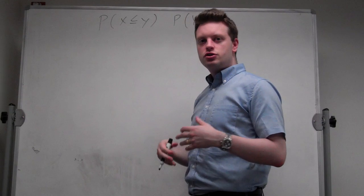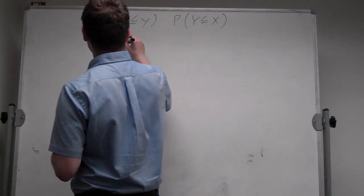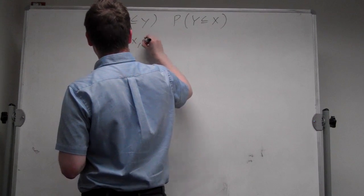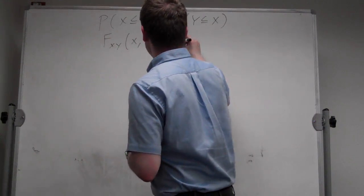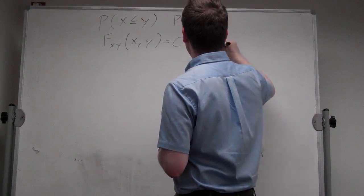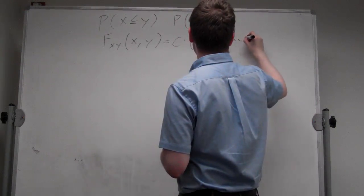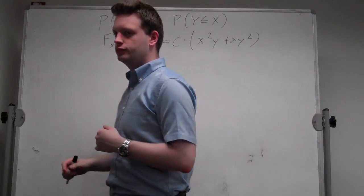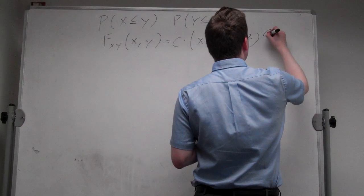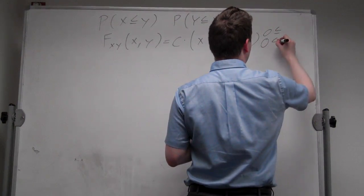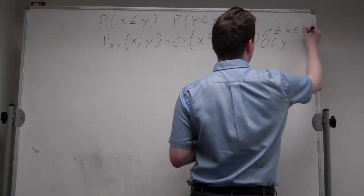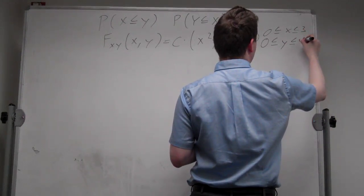Let's assume the following cumulative distribution function: F(x,y) is equal to some constant c times x squared y plus x times y squared. In addition, we have some bounds. In particular, 0 is less than or equal to x and y, and x is less than or equal to 3, and y is less than or equal to 4.